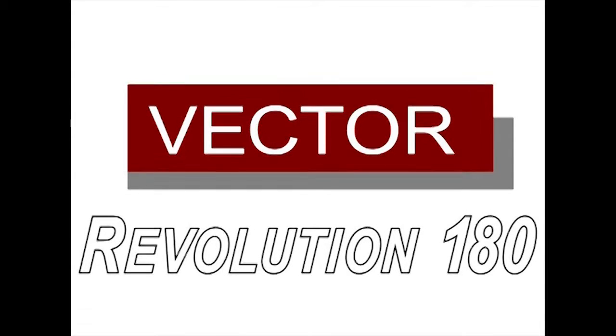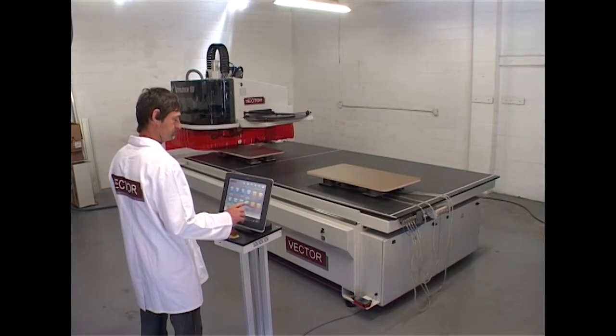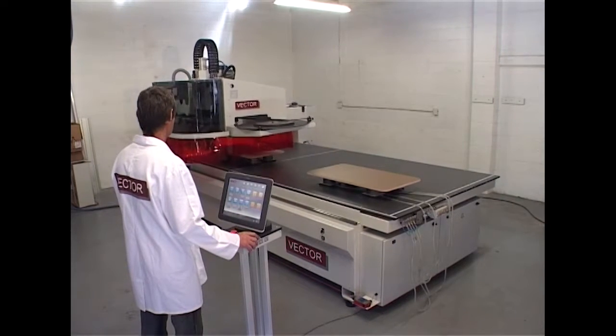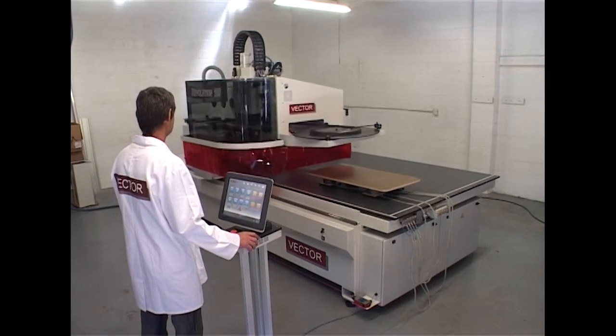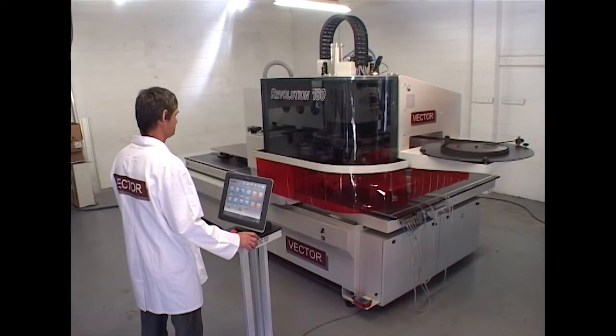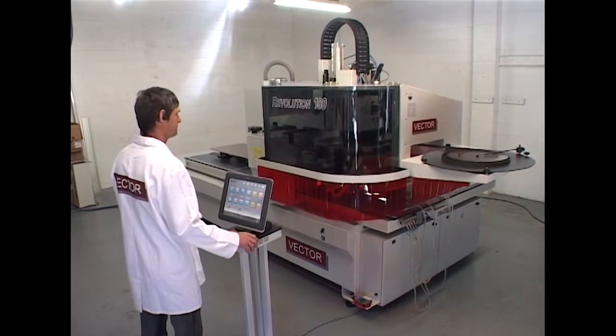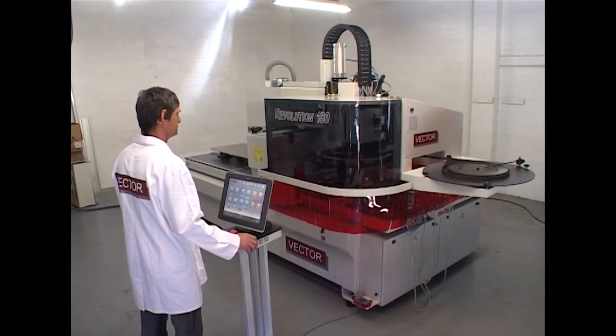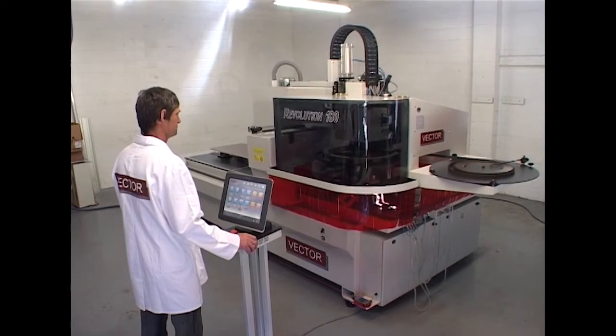The Vector Revolution 180 represents the first significant development of machinery in the composite board industry since the development of CNC machining centers some 20 years ago, broadening the scope for those products beyond square edged rectangular panels.